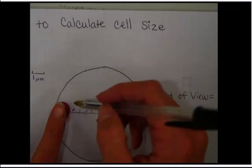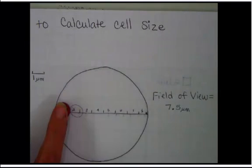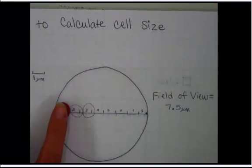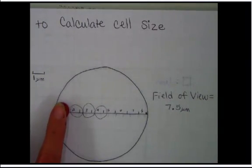You can simply draw about if this cell is that big. You can sketch the size of about what a similar cell would be all the way across the diameter.